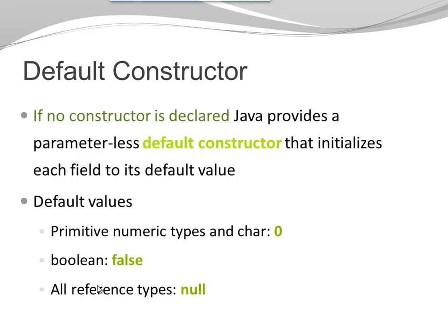If no constructor is declared, Java provides a parameter-less default constructor. And the default constructor initializes all of the fields with its default value. For a numeric primitive type, as well as for a character, the default value is zero. For Boolean, the default value is false. For all reference types, the default value is null.